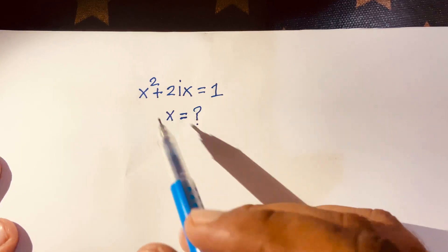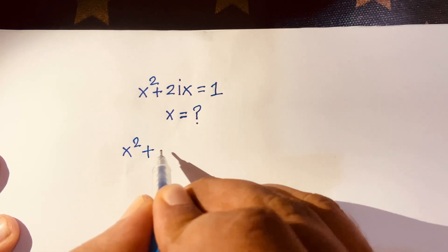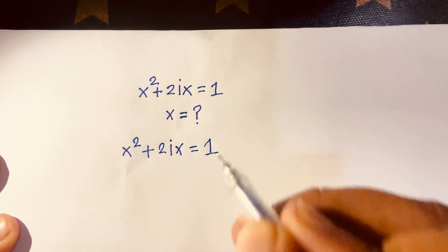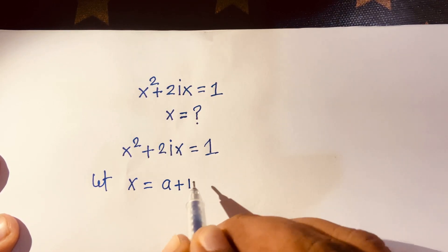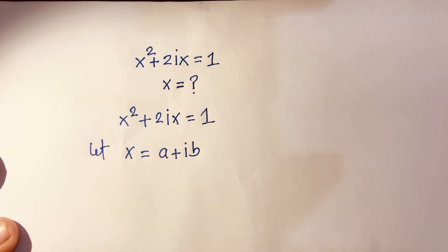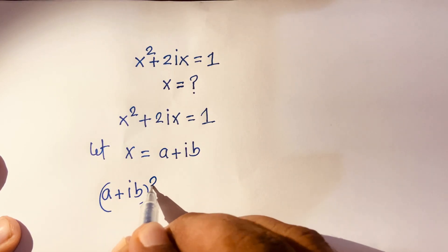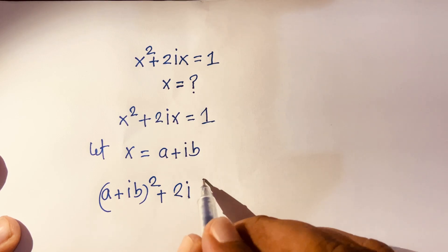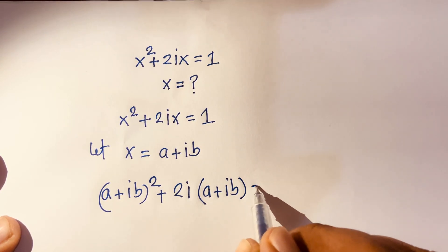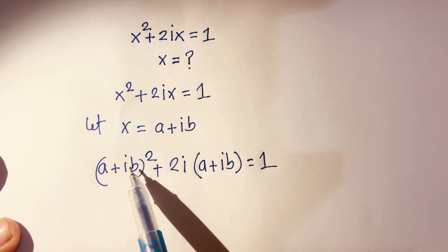For Method 1, our equation is x squared plus 2ix equals 1. Let x equal a plus iv. Then substituting, we have (a + iv) squared plus 2i(a + iv) equals 1.